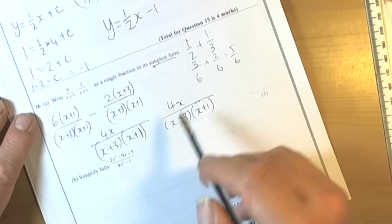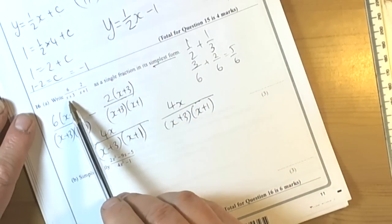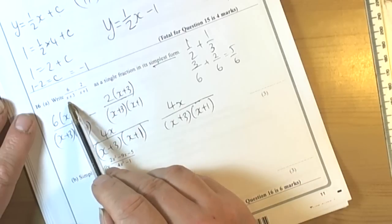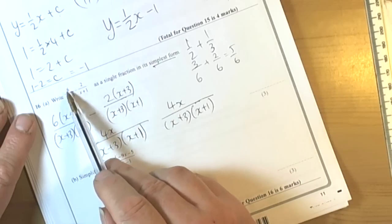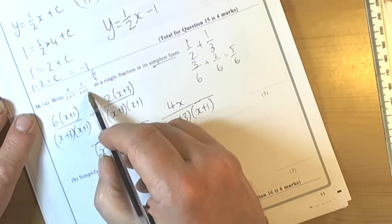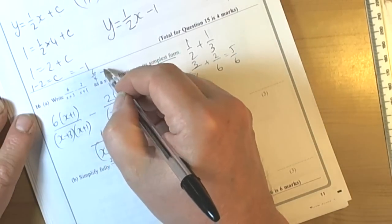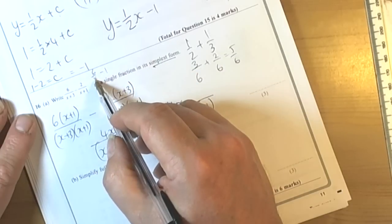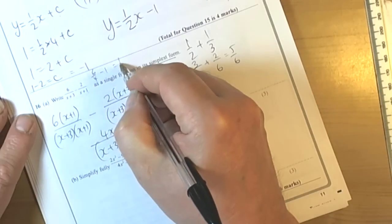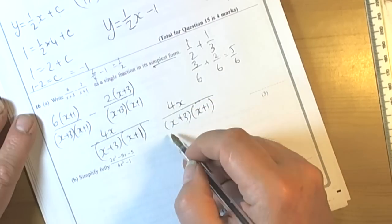Now we should really check that this works by putting in some simple numbers. So if I put in a value of 1 here, then I can see that 6 over 1 plus 3 makes 6 quarters. 1 plus 1 is 2, 2 divided by 2 is 1, so we've got 6 quarters take away 1. Well, 6 quarters is the same as 1 and a half, so this gave me an answer of a half when x was 1. So this should also give us the same when x is 1.